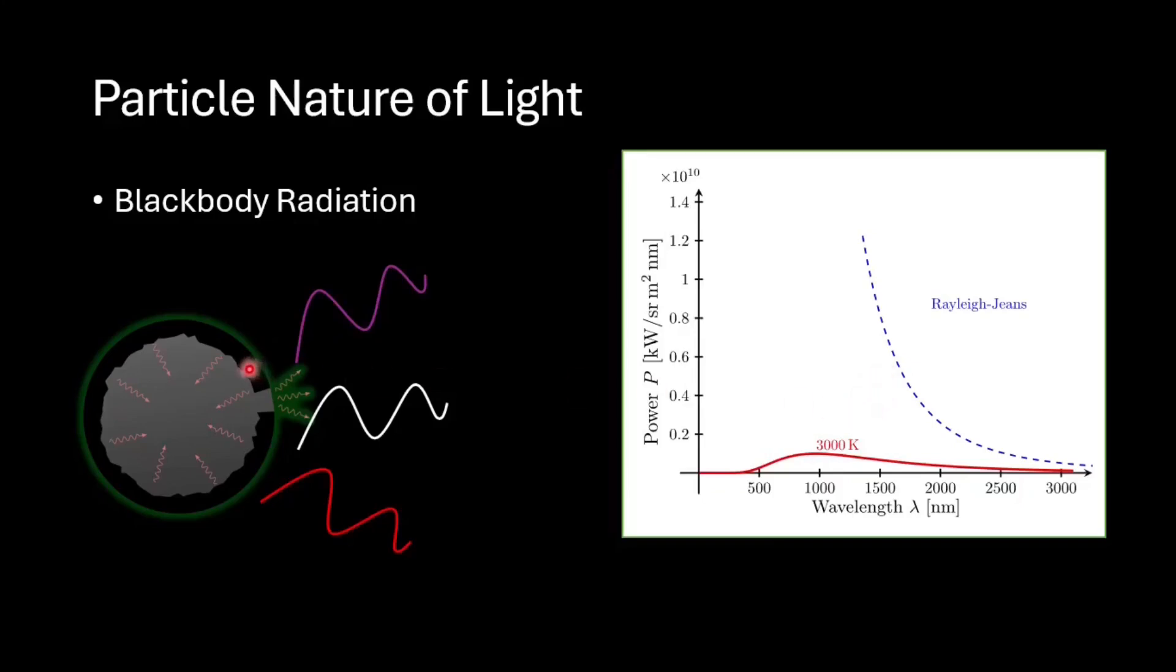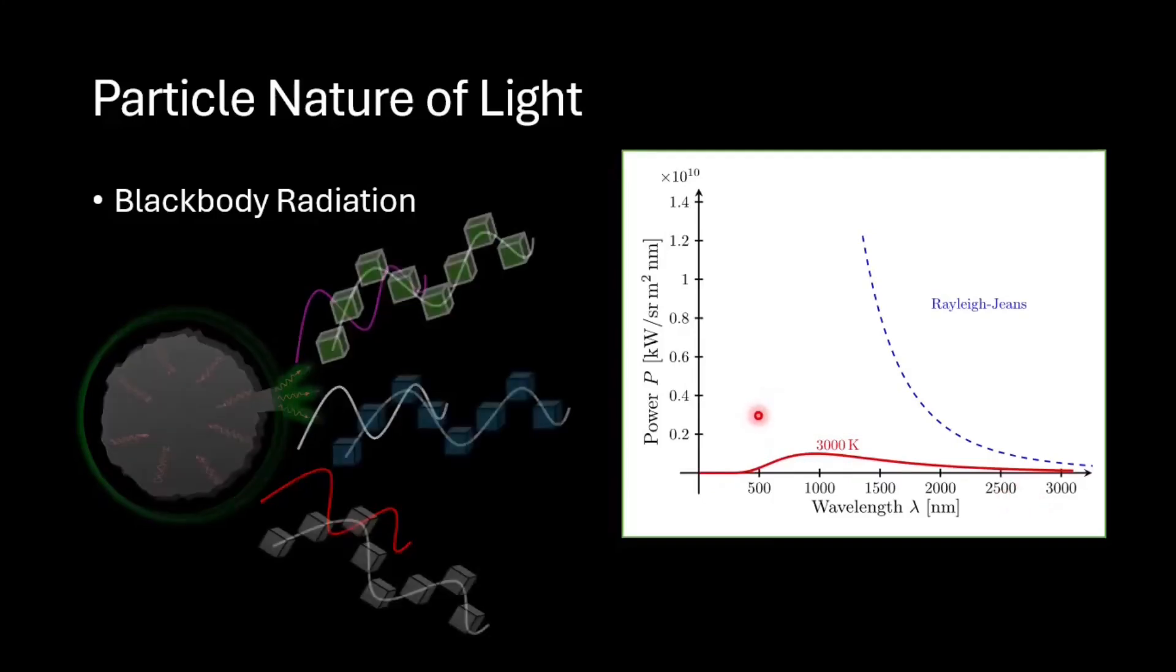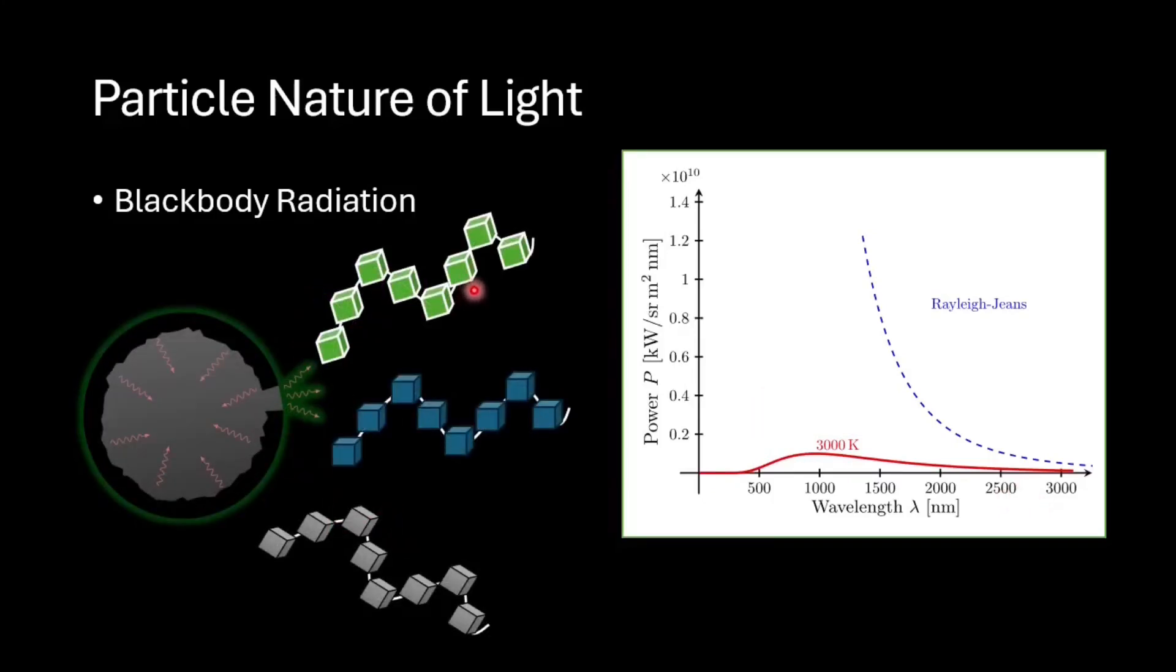However, it was observed that for a black body at any temperature, the wavelength corresponding to maximum intensity is not necessarily the shortest wavelength but somewhere in between. And the wavelengths that are shorter or longer carry very little amount of energy. This could only be explained by adopting the particle nature of light.